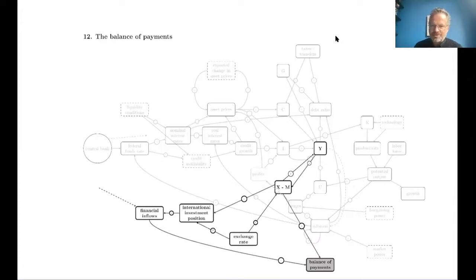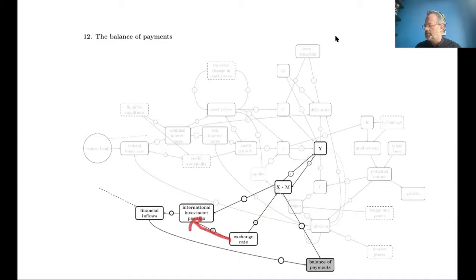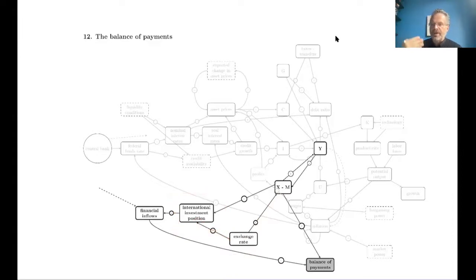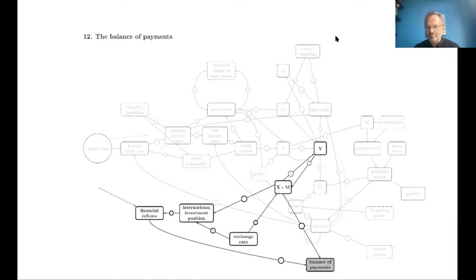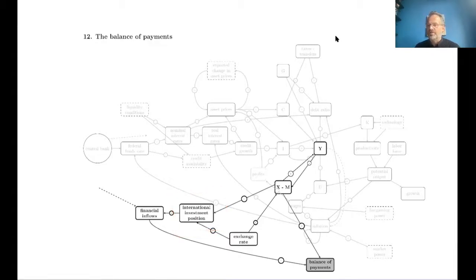Today we are just concerned with the accounting. An important element here is the exchange rate, which is a key factor determining trade flows and also has a big effect on the international investment position. The international investment position is in principle the equivalent of a balance sheet at the level of a national economy — it is the sum of all assets in the rest of the world owned by units in our economy, minus all the assets in our economy owned by units in the rest of the world. If the international investment position is positive, the country is a net creditor; if negative, the country is a net debtor.